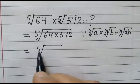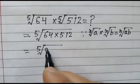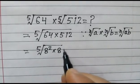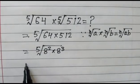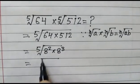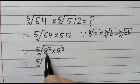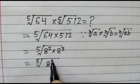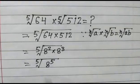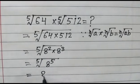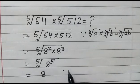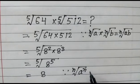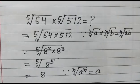So we have fifth root of 64 — which is 8 squared — into 512 — which is 8 cubed. In the next step, this becomes the fifth root of 8 to the power 5 (since 8² × 8³ = 8⁵). This equals 8, because the nth root of a to the power n is equal to a.